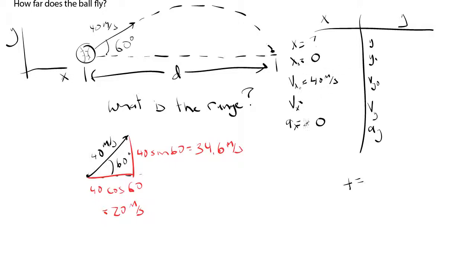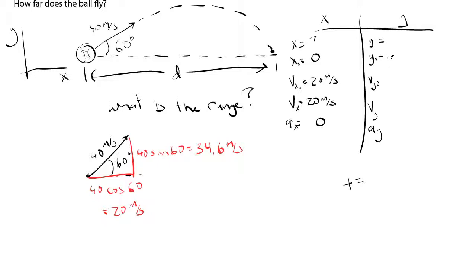So my initial x-velocity is 20 m/s, and since there's no acceleration in x, that remains constant — the final x-velocity is also 20 m/s. Looking at the x-direction, all I have is that one number and zeros. I can't solve for the range without knowing time, so I need to go to the y-direction to find time first.